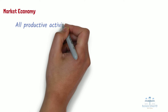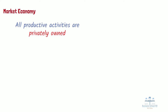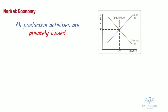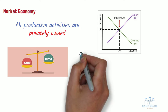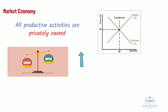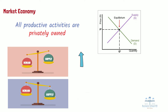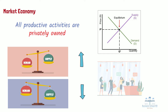The first economic system is the market economy. In a pure market economy, all productive activities are privately owned rather than being controlled by a government. Production is determined by the interaction of supply and demand, signaled to producers through the price system. If demand exceeds supply, prices will rise, signaling producers to produce more. If supply exceeds demand, prices will fall, signaling producers to produce less. In this system, consumers are paramount — their purchasing patterns determine what items are produced and in what quantity.